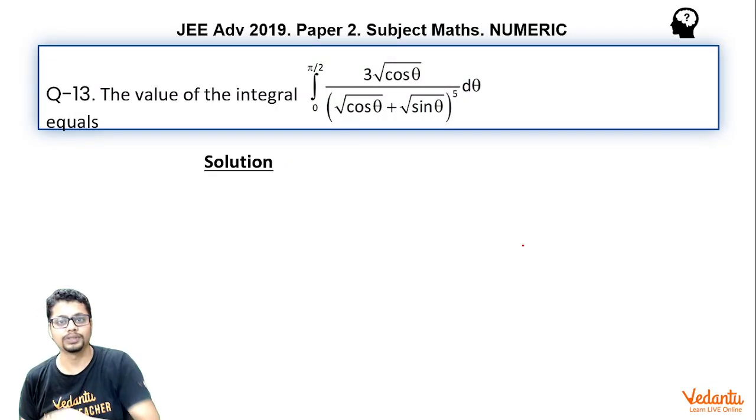And the question for this video is this. The value of the integral, 0 to pi by 2, 3 under root cos theta, divided by root cos theta plus root sin theta whole to the power 5 d theta equals.